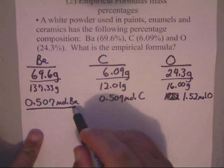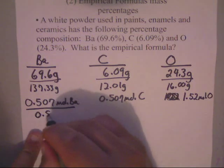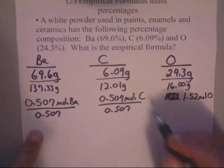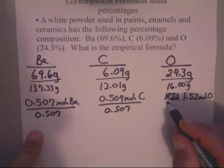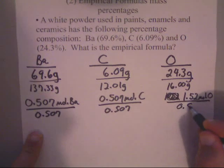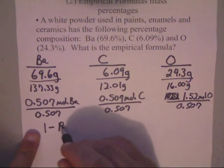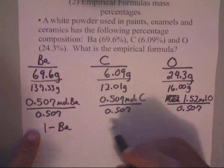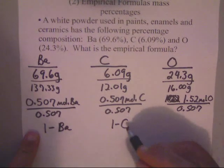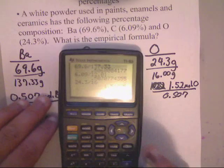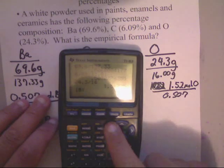Now, once again, you divide by the smallest, which, of course, is this 0.507 all the way across. Divide this by the smallest, which is 0.507, this one by 0.507, and this one by 0.507. This gives us 1 Ba, which is beautiful. This gives us 1 carbon, which is absolutely beautiful as well.